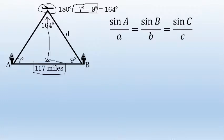The Law of Sines states that the sine of any angle in a triangle divided by the length of the opposite side equals that same ratio for any other angle and its opposite side.